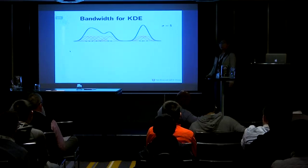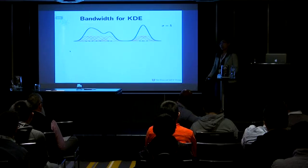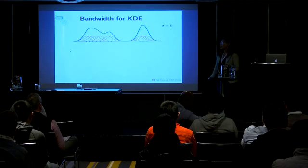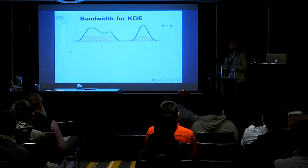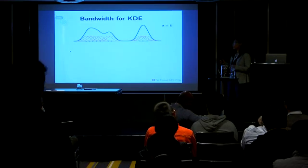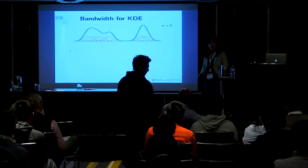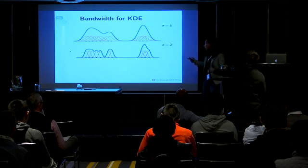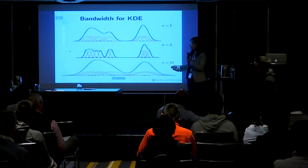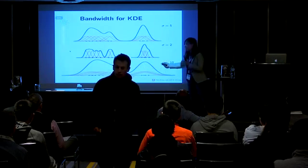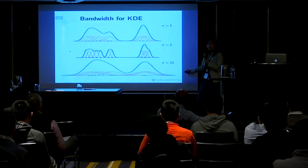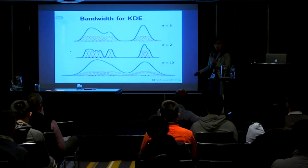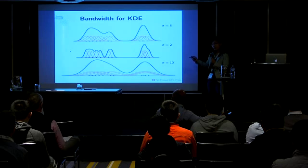Although it's called nonparametric Kernel Density Estimation, there is a very important parameter called the bandwidth. When the bandwidth is 5, the Kernel Density Estimation looks like this, and when the bandwidth is smaller, it gives a different curve. When the bandwidth is 10, it smooths out the point set more. From this example, although it's the same dataset, different bandwidths give different results and tell us about different scales of the data.